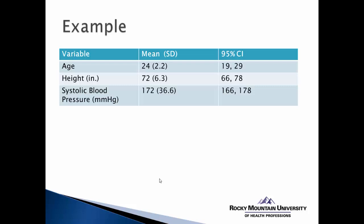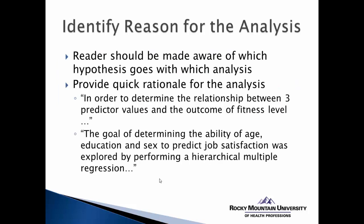So that's our first step — to be able to describe our participants, our sample, and also to describe the actual data that was collected. The next thing we want to do is very explicitly identify the reason for the analysis. This is especially important if we have multiple analyses within one paper, or multiple analyses done on one data set, so the reader should be able to very easily follow along with which analysis goes with which hypothesis. We need to provide that quick rationale for the analysis that we're doing.